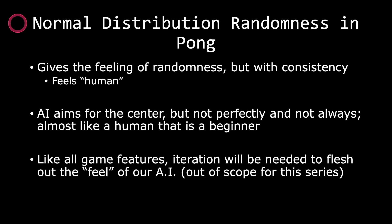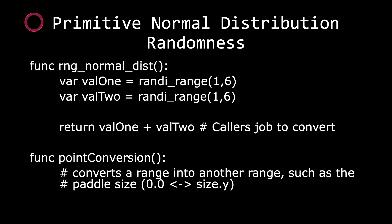In this case, our A.I. aims for the center but not perfectly and not always — almost like a human that is a beginner. Like all game features, iteration will be needed to flesh out the feel of our A.I., and this is out of scope for this series. Here I have an example of a primitive normal distribution randomness generator.